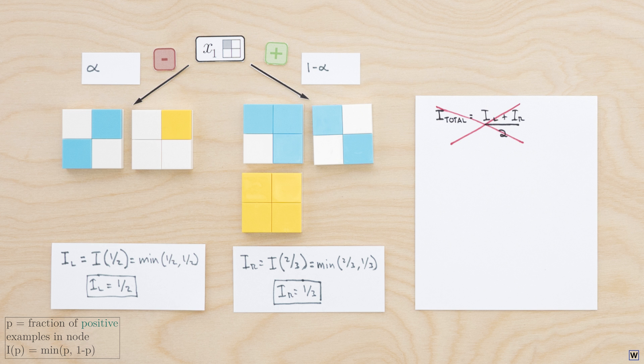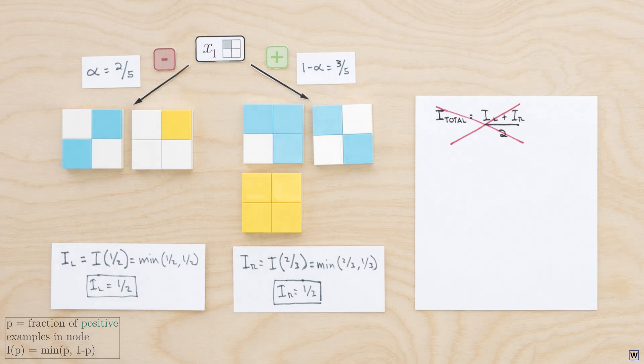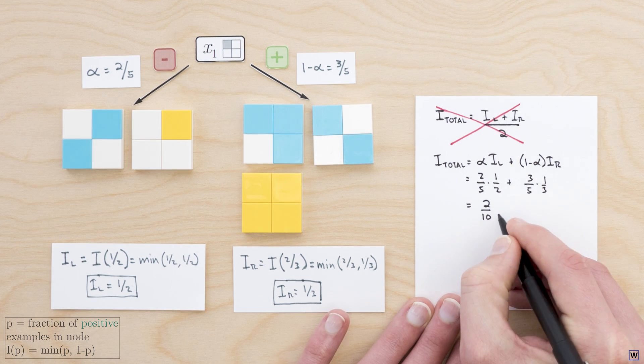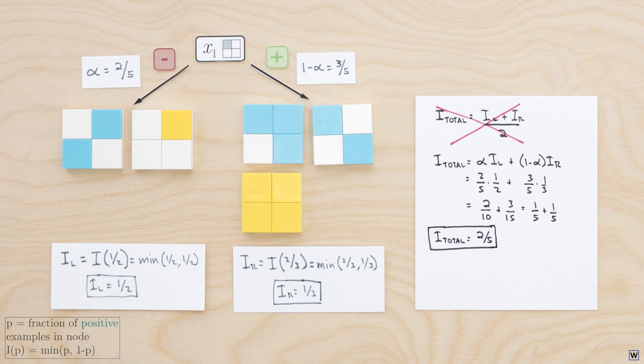So for our x1 split, since two of our five examples end up in our left node, we'll use a weight, or alpha, of 2 fifths. Our remaining three examples end up in our right node, making the weight for this node equal to 3 fifths, or 1 minus alpha. After some fun fraction adding, we end up with a total impurity of 2 fifths for this split.